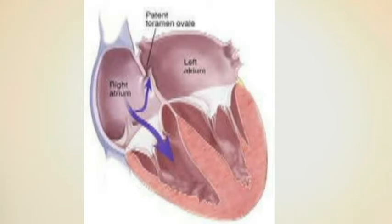The blood can either go through the tricuspid valve into the right ventricle, or it can go through the foramen ovale into the left atrium. The foramen ovale is the second of our three important structures.